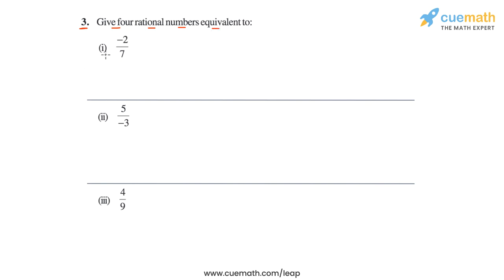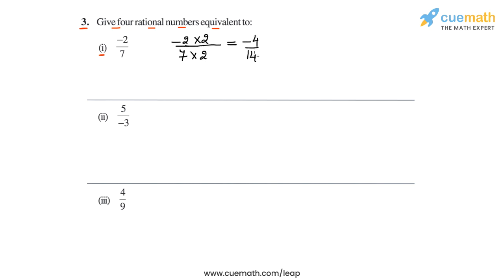Let's start with the first part. The rational number in the first part is minus two by seven. Now to write any equivalent rational number for this number, we just need to multiply its numerator and denominator by the same integer multiplier. So if we multiply both the numerator and denominator by two, this will give us minus four by 14. So this is an equivalent rational number.